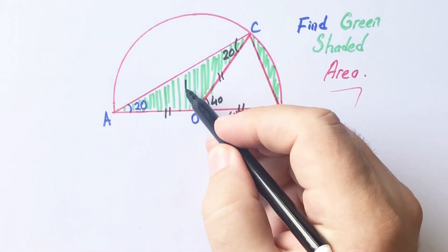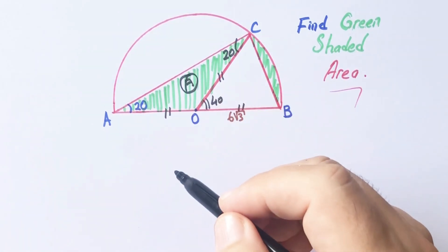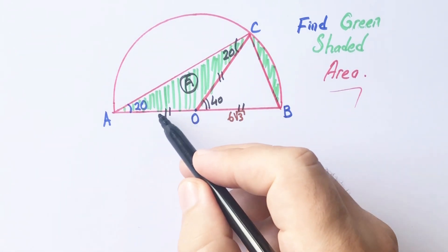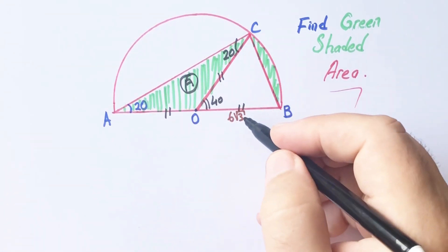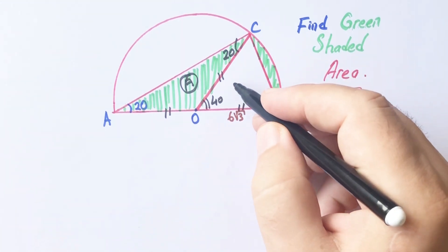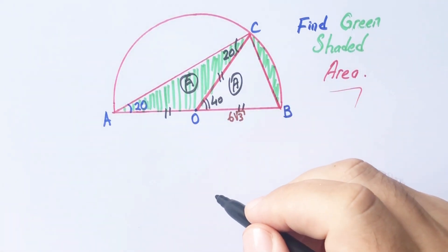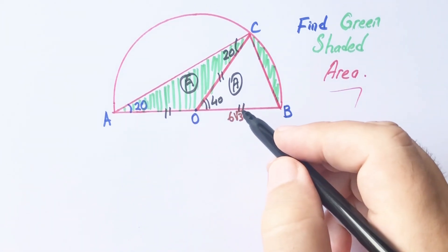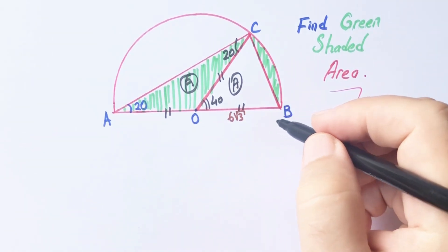Let's call this area uppercase A. If you notice that, the area of triangle ACO is equal to the area of triangle OCB. Why? Because they have same height and same base.